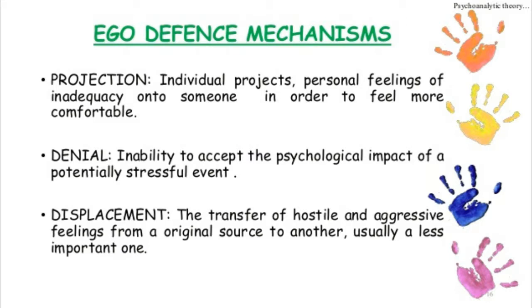When anxiety becomes overwhelming, the ego must defend itself. It does so by unconsciously blocking the impulse or distorting them into more acceptable, less threatening forms — these are ego defense mechanisms. The first is displacement: transfer of impulses onto a substitute person. Like if a student is scolded by a teacher, she may take it out on a less dangerous substitute, such as shouting at juniors, slamming a door, or stamping feet.